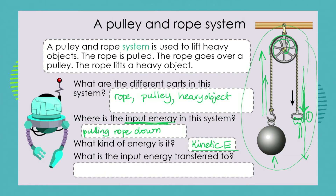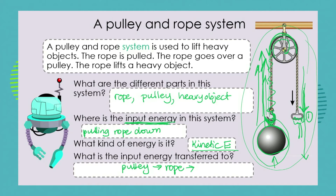The input energy is transferred from the rope, to the other side of the pulley, to the little hook — and we're going to see the rope with the hook and the object being lifted upwards. So it's transferred to the pulley, which transfers it again to that part of the rope, to the heavy object, and the heavy object then moves.